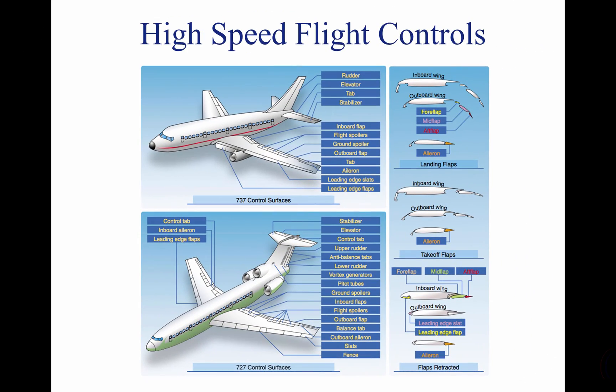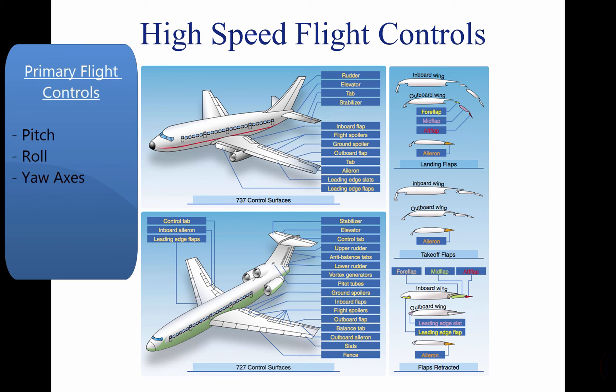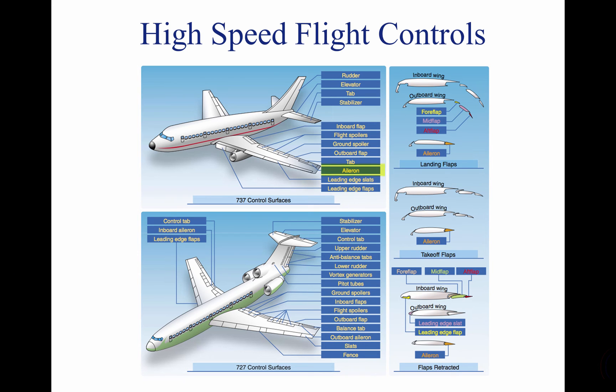On high-speed aircraft, flight controls are divided into primary flight controls and secondary or auxiliary flight controls. The primary flight controls maneuver the aircraft about the pitch, roll, and yaw axes. They include the ailerons, elevator, and rudder.